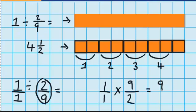One times nine is nine, and one times two is two. And we know that nine halves is the same as four and a half. So we got the same answer that we got when we used materials.